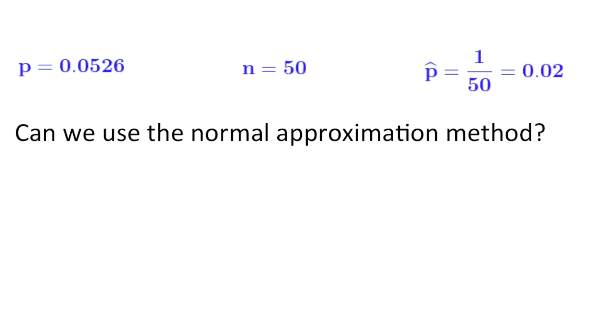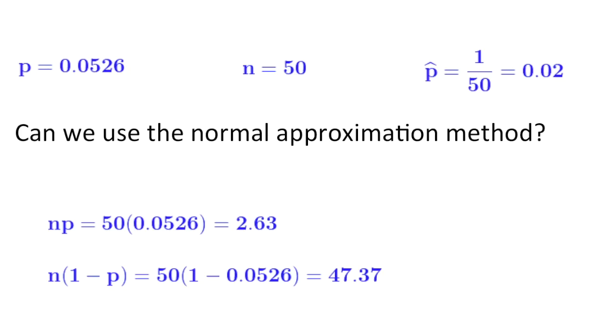First question you might ask is, can we use the normal approximation method? Well, in order to use the normal approximation method, both N times P and N times 1 minus P must be at least 10. Here, N times P equals 2.63. N times 1 minus P equals 47.37. N times P is less than 10, so we cannot use the normal approximation method.